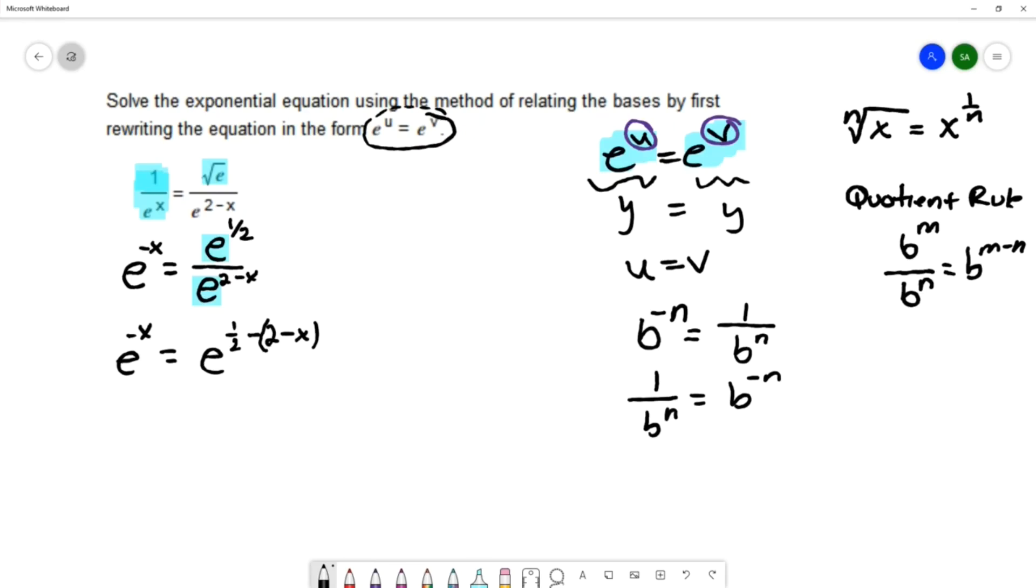So we have finally gotten to the point where we have e to a power on one side and e to a power on the other side. And using this method of relating the bases, we're able to say that the exponent on the left, -x, is equal to the exponent on the right, 1/2 - (2-x). So we have now transformed this from an exponential equation into a linear equation.